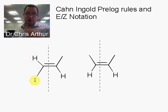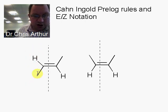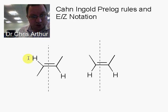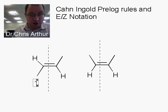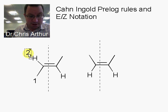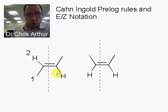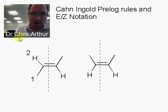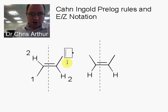Looking at one side only: we have a hydrogen here and a carbon attached to three hydrogens — a methyl group. Carbon has a higher atomic number than hydrogen, so this methyl group is more important than the hydrogen. By convention, the most important group is number one and the least important is number two. On the other side, hydrogen is on the bottom and carbon is up top. Hydrogen has a lower atomic number than carbon, so it's priority two and the methyl group is priority one.